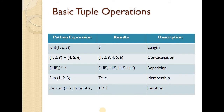Basic tuple operations are the same as list operations: length, concatenation, repetition, membership (in), and for-x iteration. Length calculates the size; two tuples can be concatenated; repetition repeats elements. The membership operator checks if an element is available — for example, 3 in (1, 2, 3) returns True, otherwise False.